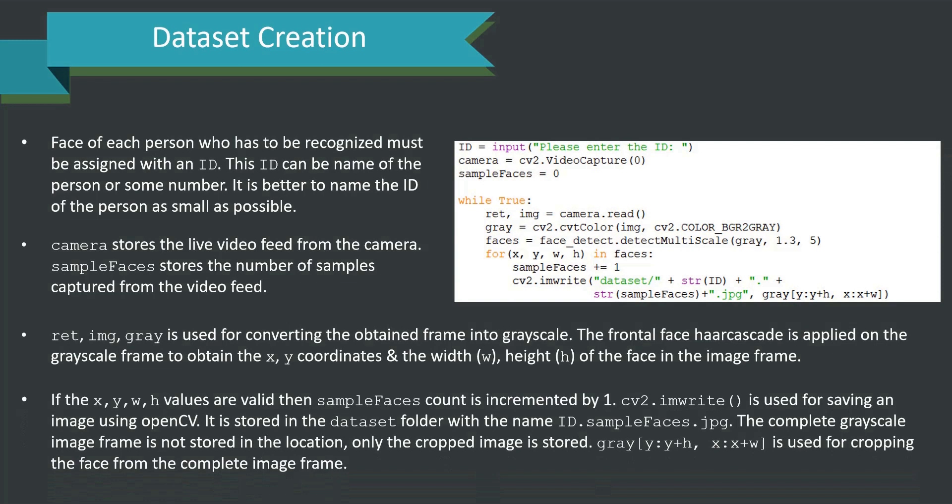cv2.imwrite is used for saving an image using OpenCV. It is stored in the dataset folder with the name id.samplefaces.jpg. The complete grayscale image frame is not stored in the location, only the cropped image is stored. Gray y colon y plus h comma x colon x plus w is used for cropping the face from the complete image frame. All these details are presented in the code snippet as proper code and you are requested to go through it. It is very easy to understand and very important to understand as well.